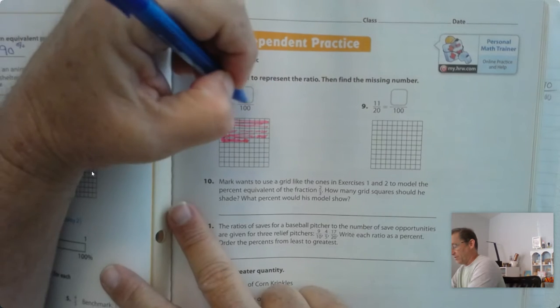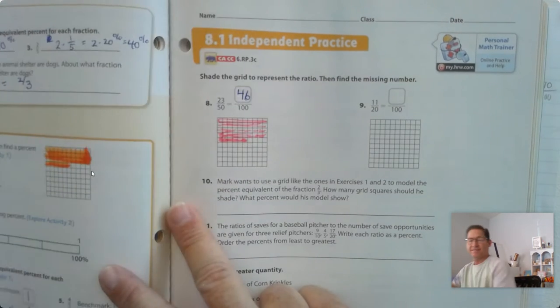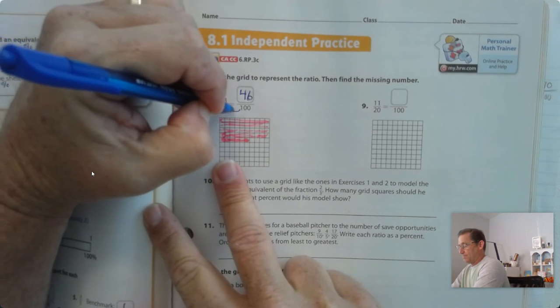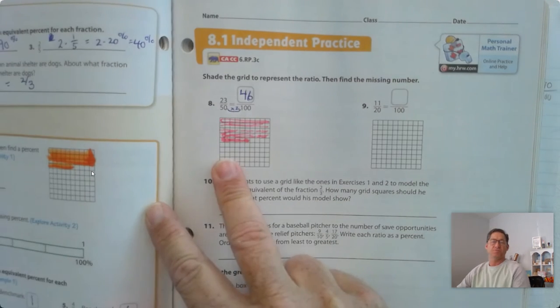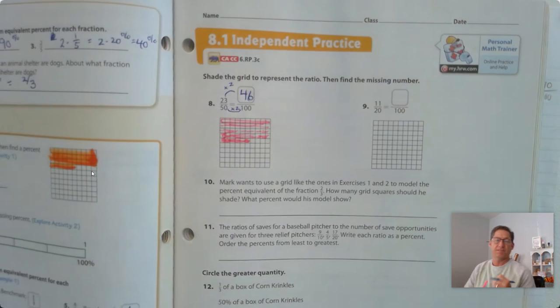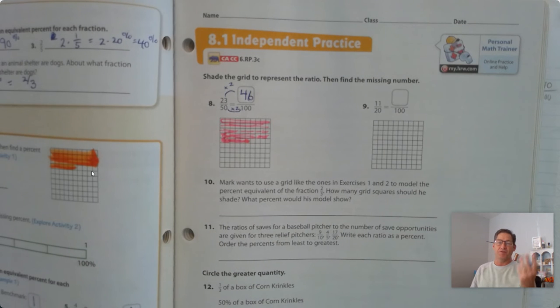Okay, so the missing number is 46 out of 100. And we can do that mathematically. 50 times 2 is 100, and 23 times 2 is 46. If you double 23, you get 23 plus 23, 46.